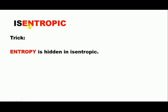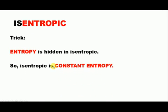Moving on towards the next term which is isentropic. In isentropic, entropy is hidden. So ISO is constant, entropy is there, so it becomes constant entropy.